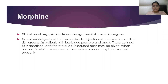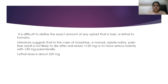Occasional delayed toxicity can be due to injection of an opioid into chilled skin areas or in patients with low blood pressure and shock. In those cases, the drug is not fully absorbed and a subsequent dose may be given. When normal circulation is restored, an excessive amount may be absorbed suddenly. It is difficult to find the exact amount of an opioid that is toxic or lethal to humans.